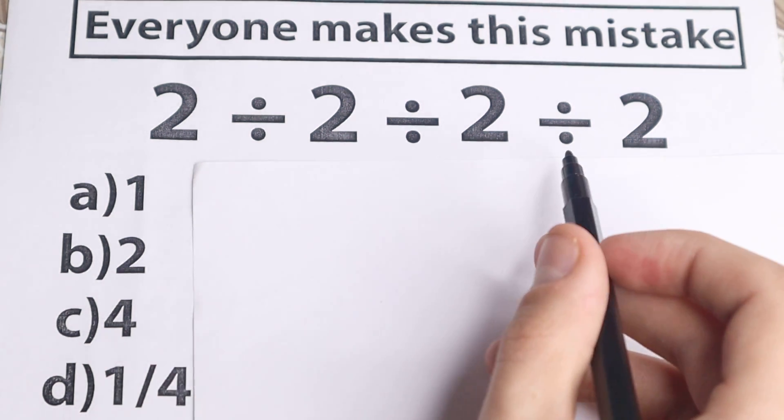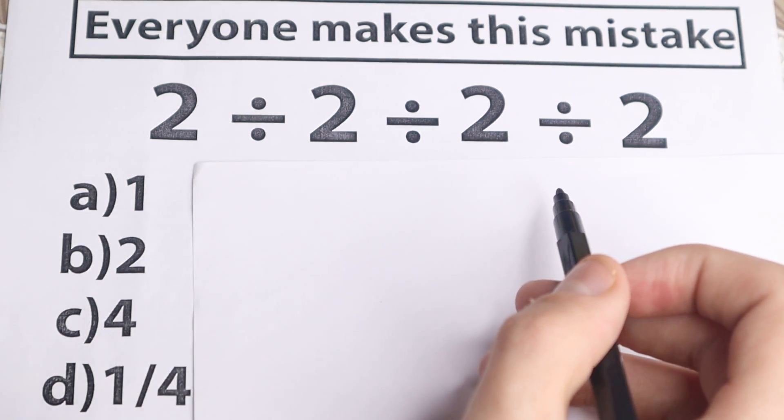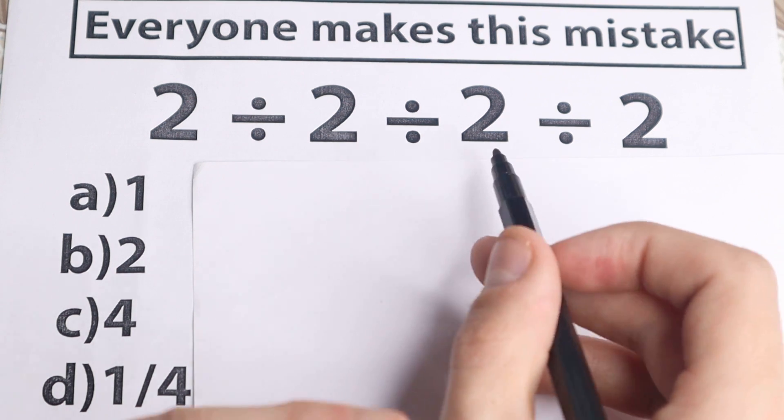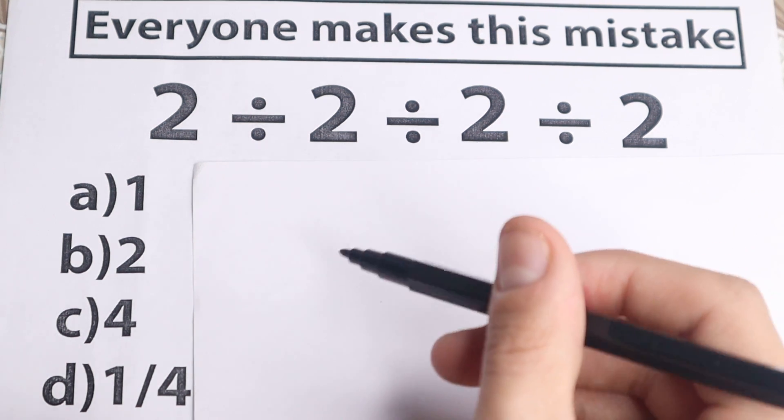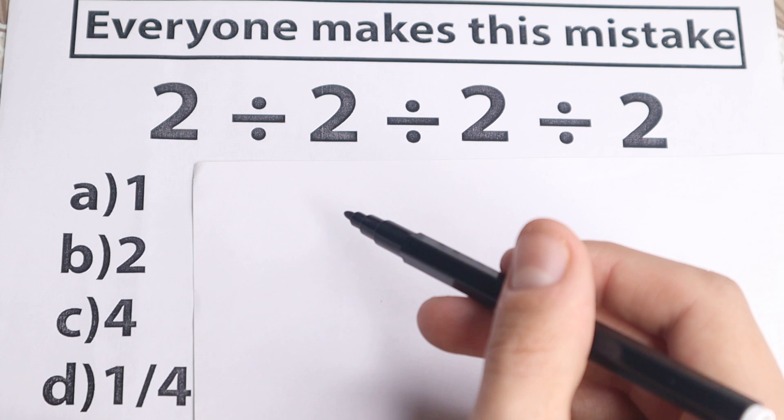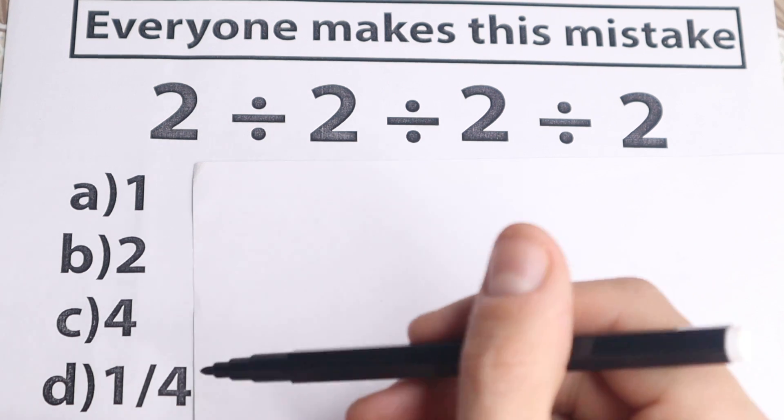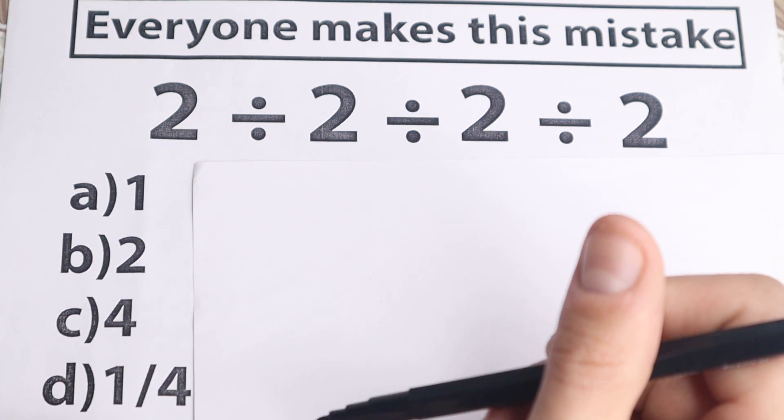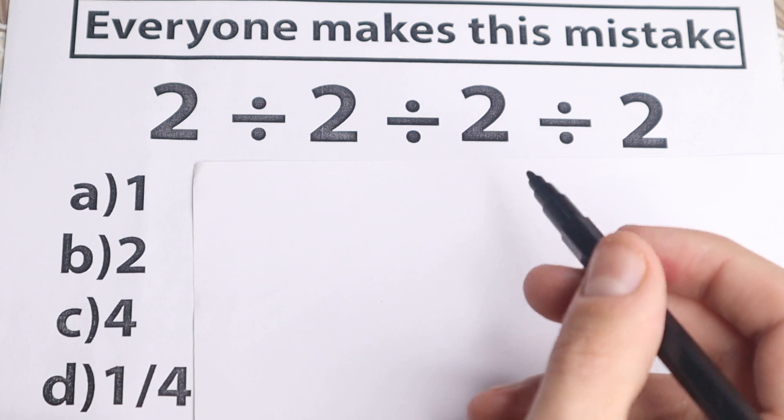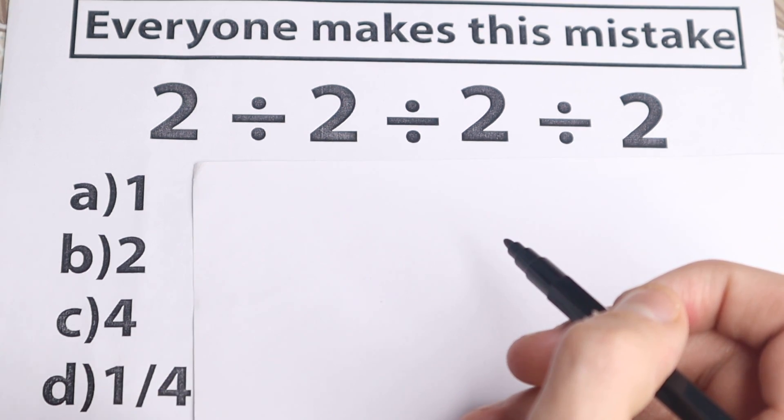We have 2 divided by 2, divided by 2, divided by 2, and I don't want you to use your calculator right here, because this looks like a simple problem, but right now I suggest you to choose an option. What do you think is the correct answer to this problem? 1, 2, 4, or 1 fourth. It will be really interesting to check our answer in the end of the video, and of course for you to check your brain level and your algebra skill right here.